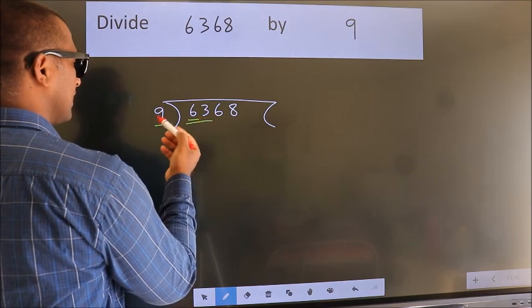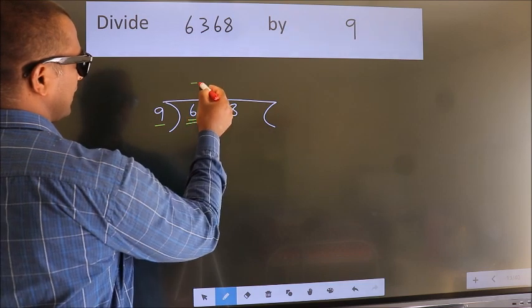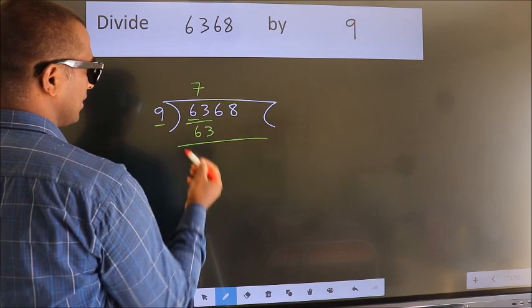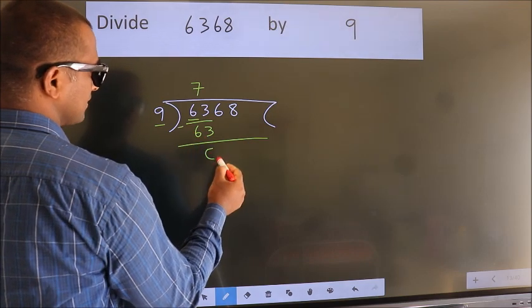When do we get 63? In 9 table. 9 7s, 63. Now, we should subtract. We get 0.